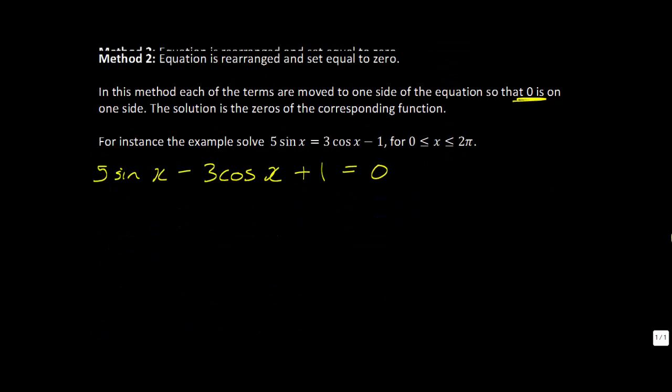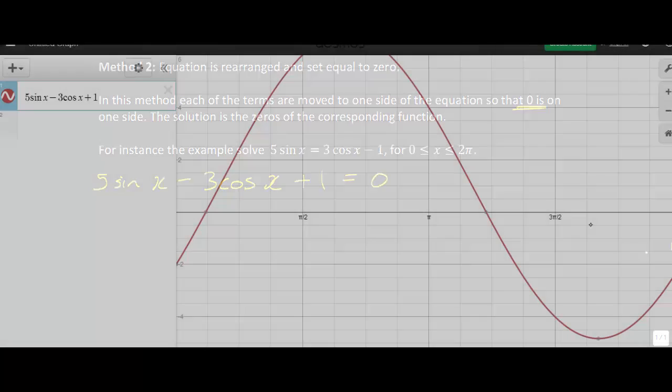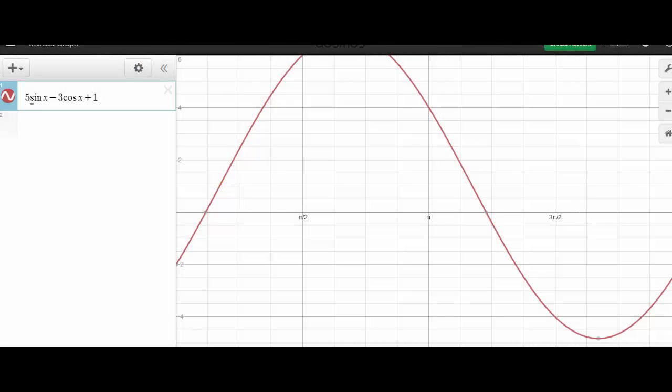All right, so let's head over to Desmos and take a look. All right, so you'll notice that I put in my new function like this when I've moved everything over to one side of the equation. So the 3 cosine of x was moved over so it became negative and then the negative one was moved over so it became a positive one. So we have that all right there.